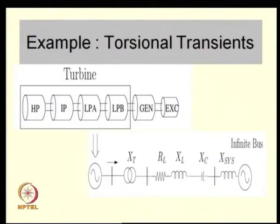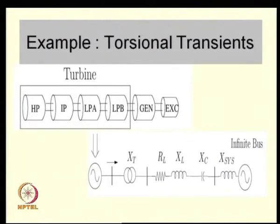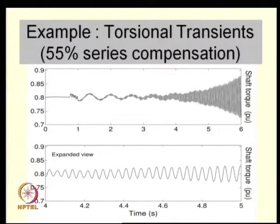In the previous example where we studied sub-synchronous resonance, we considered the adverse interaction of a series-compensated transmission network on the shaft of a generator-turbine system. We did a case study of a steam turbine generator where the rotor was represented by a six-mass system connected by shafts. We saw that for a certain level of series compensation, there was adverse interaction and growing oscillations of one particular torsional mode.